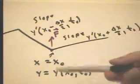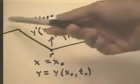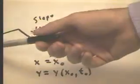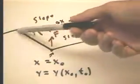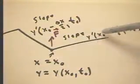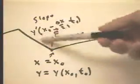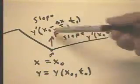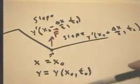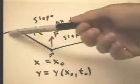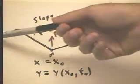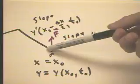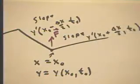Here we have a point on a graph. This is maybe really the graph of a smooth curve, but we're going to break this graph down into segments. So we have a slope here, a slope here, a slope here.